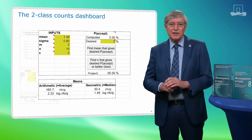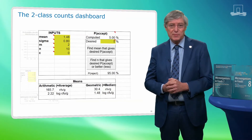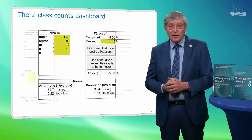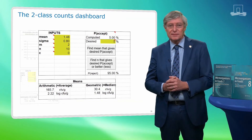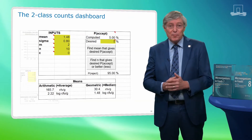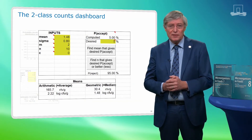Below the inputs box is a box for outputs, in which two means are expressed in CFU per gram and in log CFU per gram. To the left, the arithmetic mean, or average, is expressed — this is the mean of concentrations without log transformation. To the right, the geometric mean, or median, is shown, which is the mean of log-transformed concentrations.